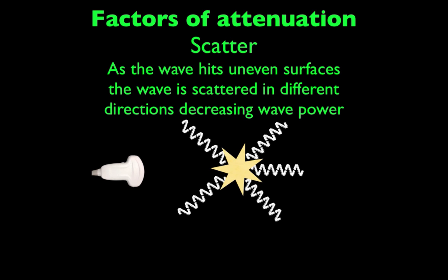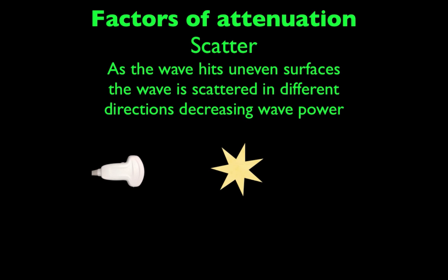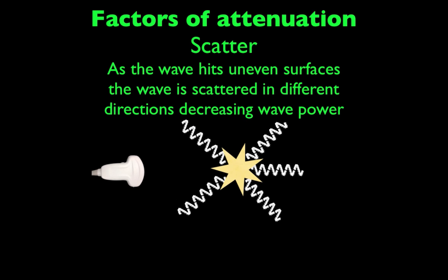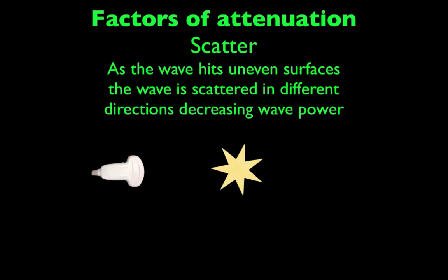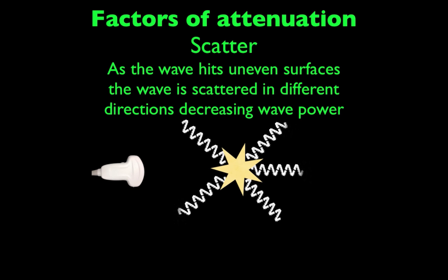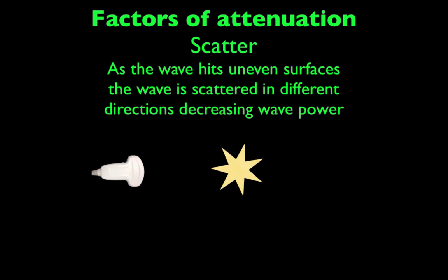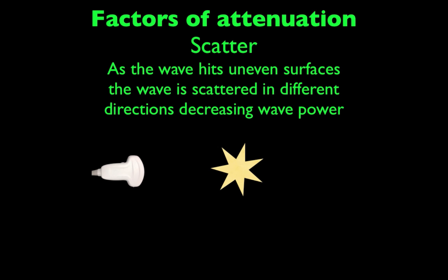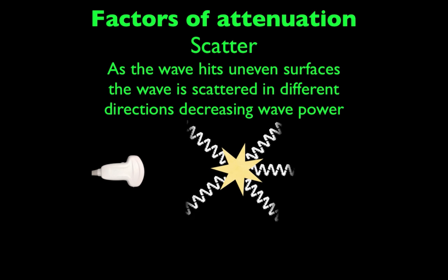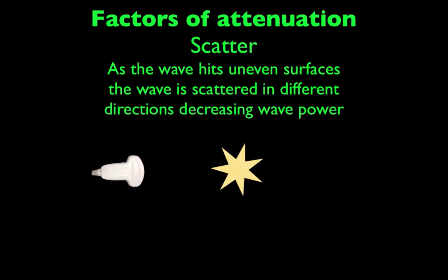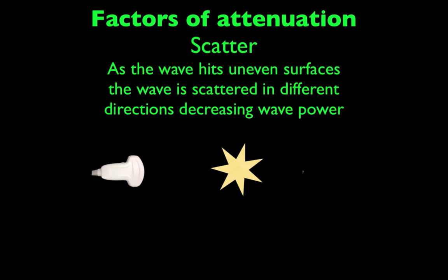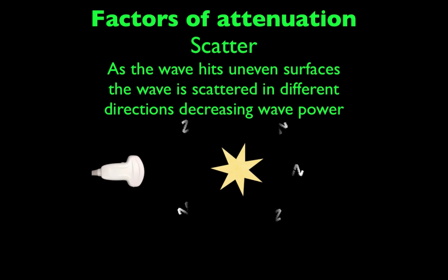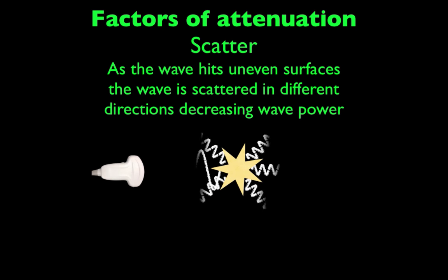Scatter is the third type. Not every surface is flat and smooth enough to return sound waves back to us — our bodies don't have nice smooth edges. As the waves hit the different structures throughout the liver, heart, kidneys, or abdomen, you're going to have some scatter. Those sound waves come down, hit uneven surfaces, and much like reflection, they don't return to the ultrasound probe. Instead, they get reflected away in different directions.